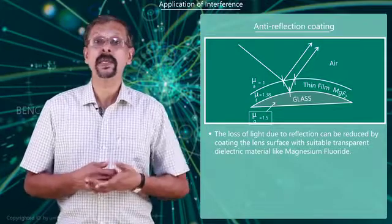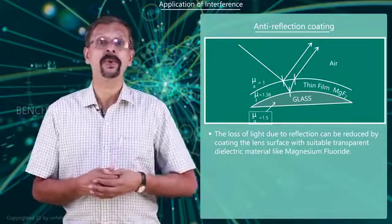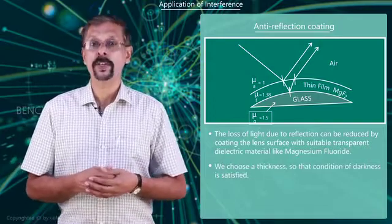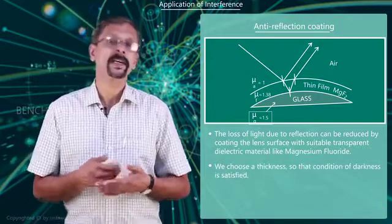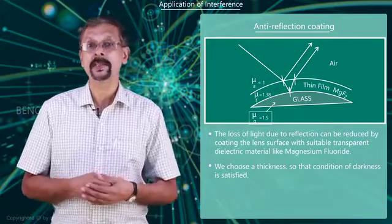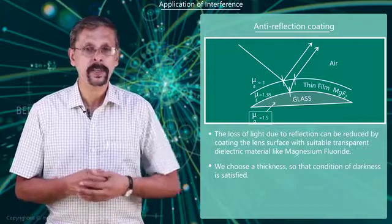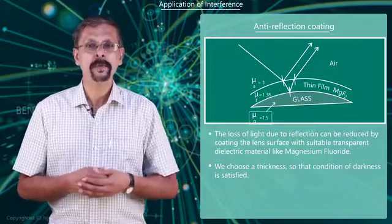And hence, the same phase change occurs for both rays. We choose an appropriate thickness for the film such that the condition for darkness is satisfied for the reflected light. For near normal incidence and minimum thickness,